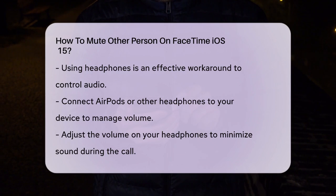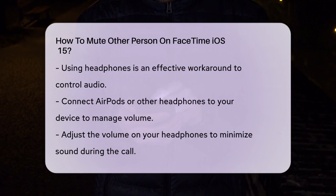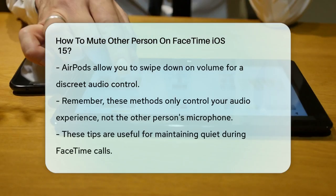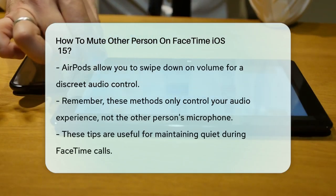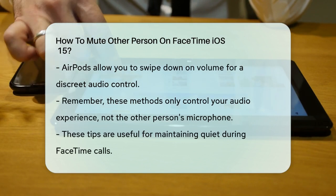Another effective method is to use headphones. Connect your AirPods or any other headphones to your iPhone or Mac, and then adjust the volume on your headphones. This way, you can see the video but not hear the audio. You can also use the volume controls on your headphones to turn down the audio. For example, on AirPods, you can swipe down on the volume to silence the call.